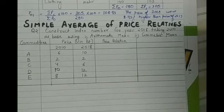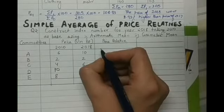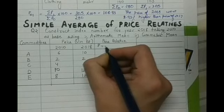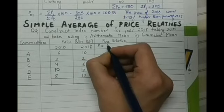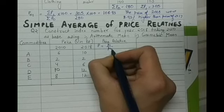In this particular method, there are two steps that you need to take. So the very first step is to take the price relative. How is the price relative calculated? You would calculate capital P, that is P1 upon P0 into 100. Here P1 is 2018 and P0, the base year, is 2010.